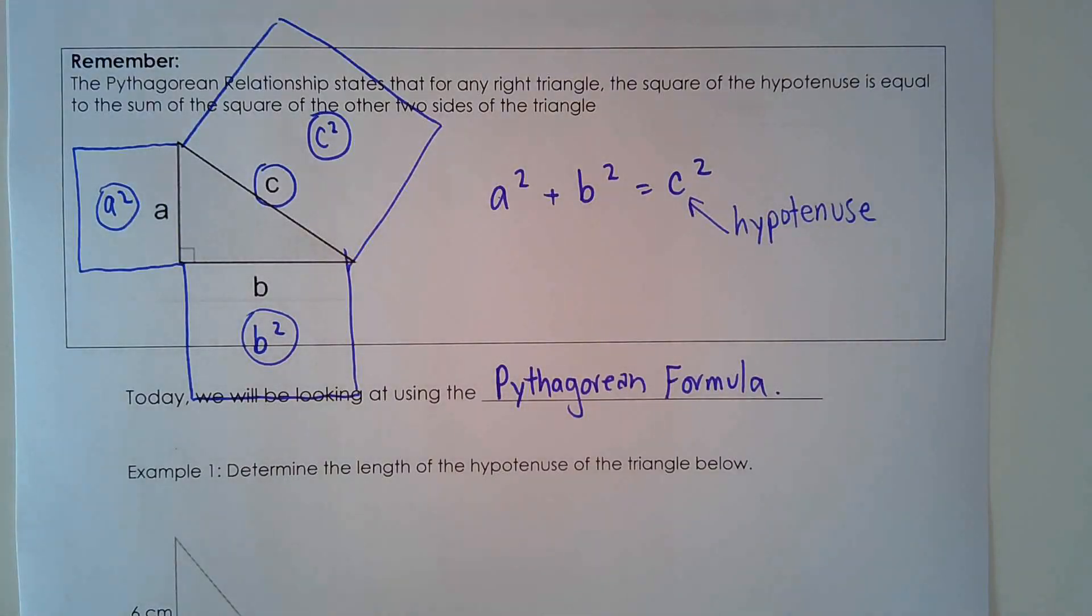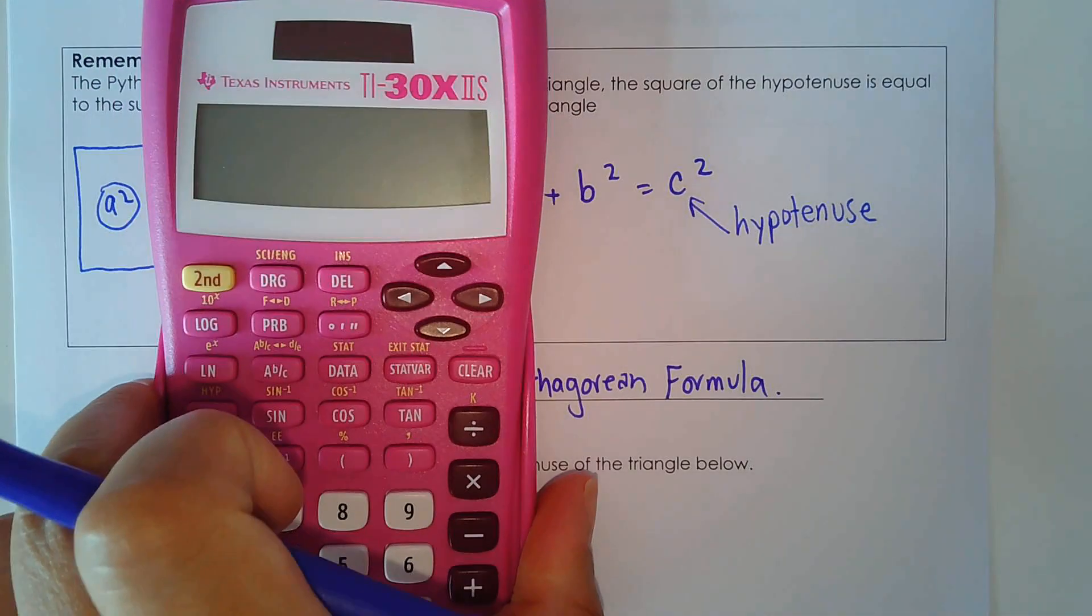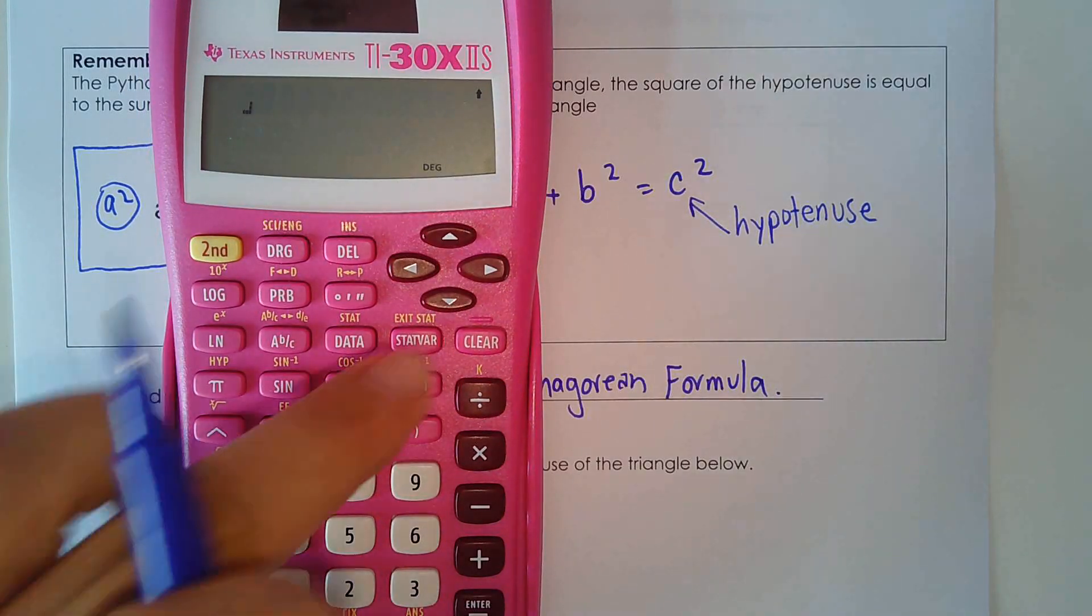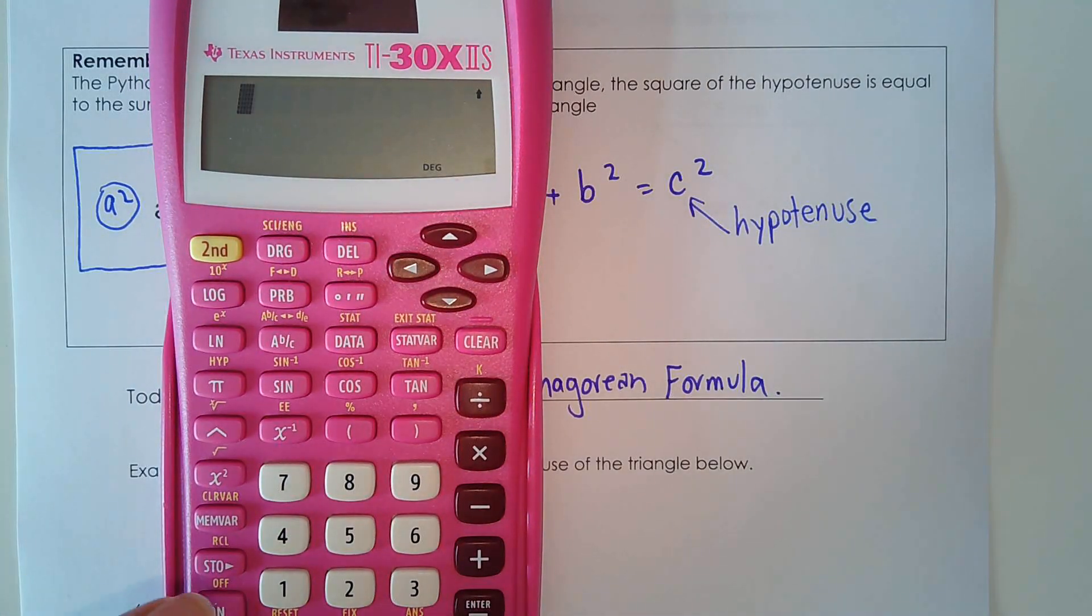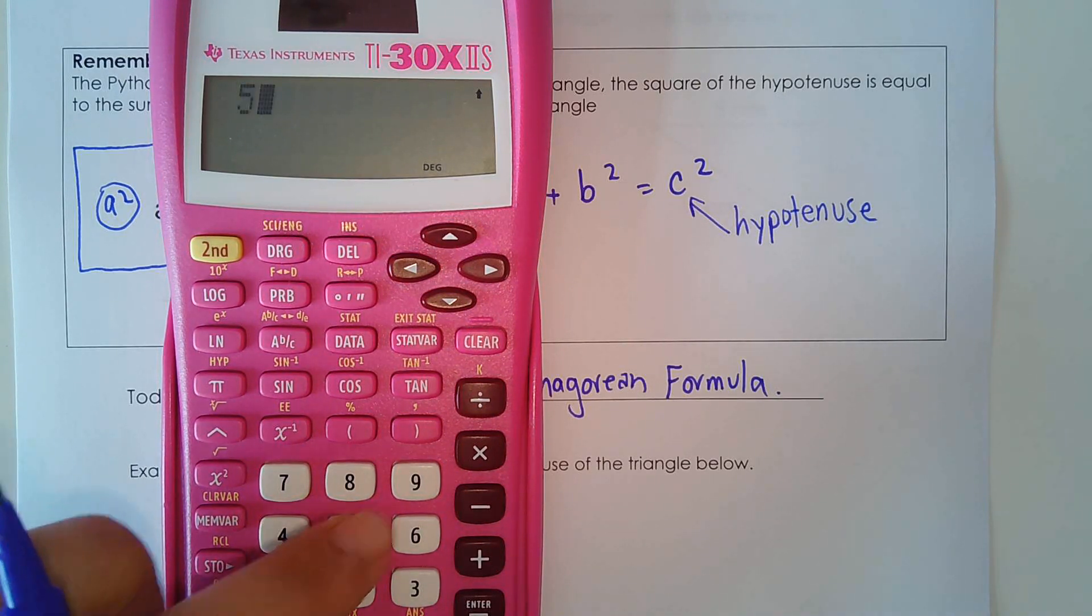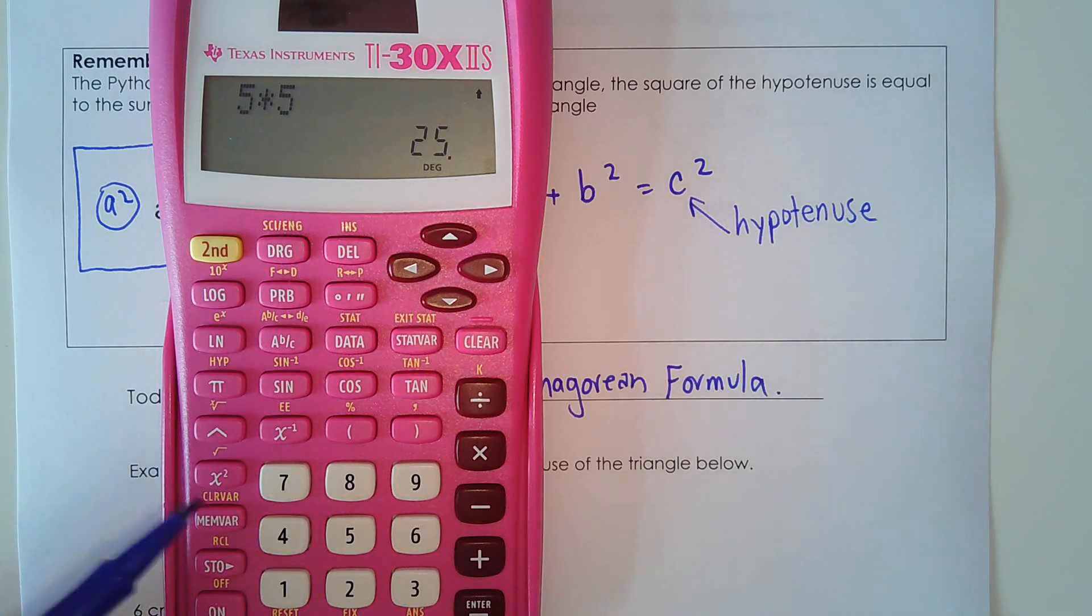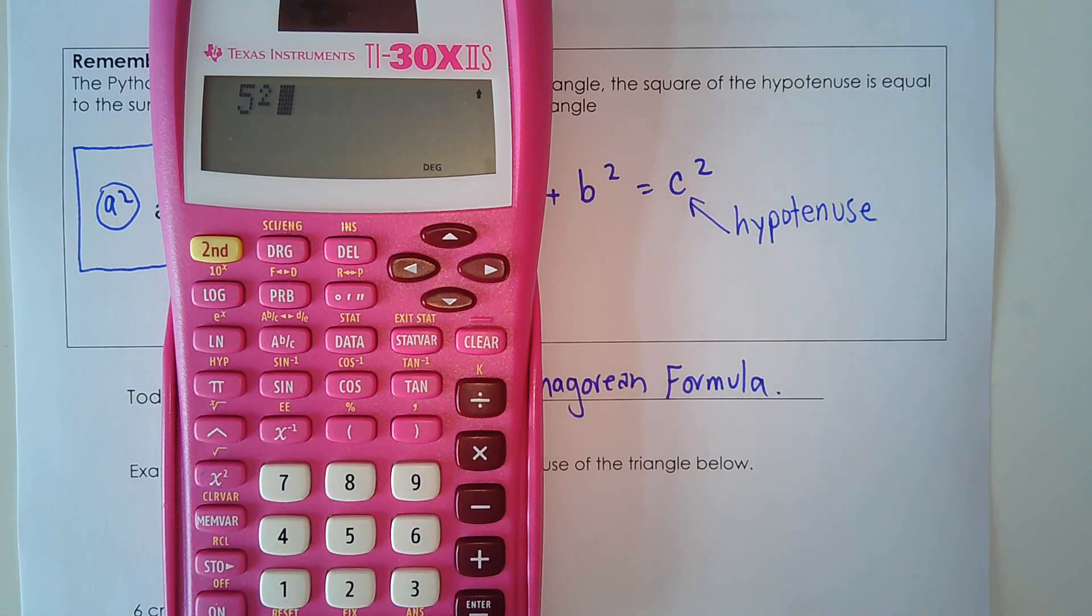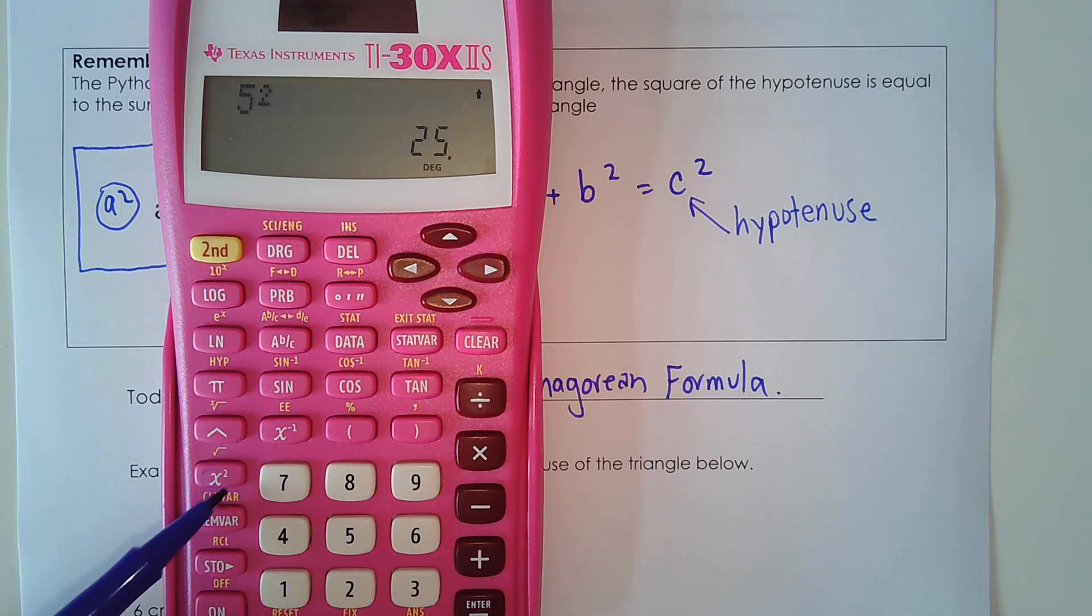And actually before we start the questions, your calculators, I know many of you, you should know how to do this by now but if not, if I wanted to do 5 squared rather than going 5 times 5, right? You should look on your calculator, find this key here. So 5 squared. And it gives you 25. So I'll be using this key and you should as well.